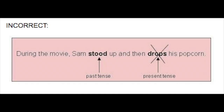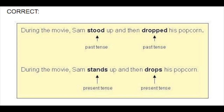Number seven is tense consistency. As a general rule of thumb, do not switch from one tense to another unless the timing of an action demands it. I'm also going to leave a link to an article from towson.edu that explains this in more detail in the description box below. For example, 'During the movie, Sam stood up and then drops his popcorn' is incorrect because 'stood' is past tense and 'drops' is present tense. The correct version is: 'During the movie, Sam stood up and then dropped his popcorn' — both in past tense.